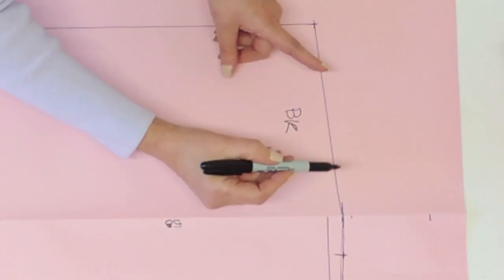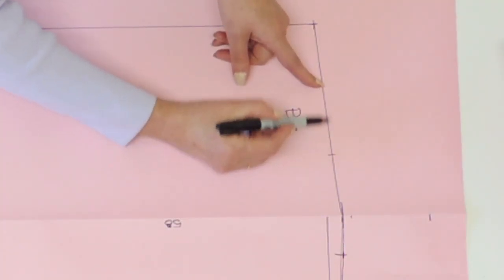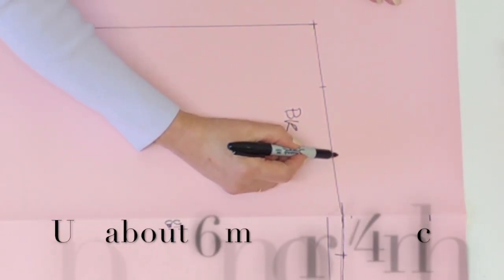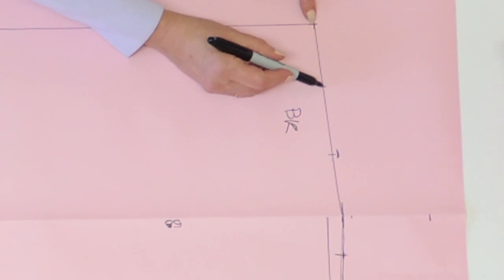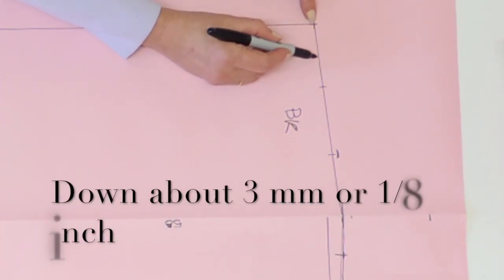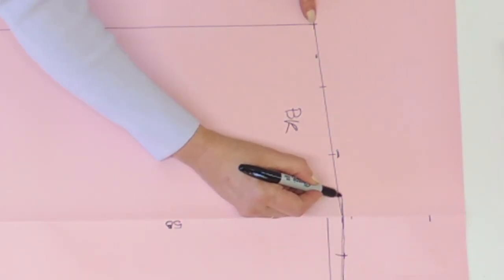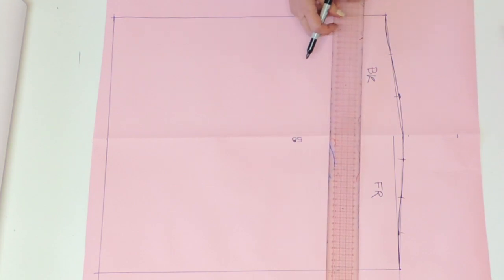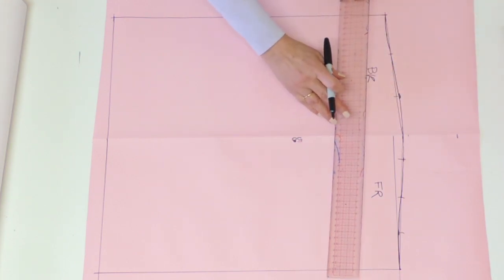Now on the back side you're going to divide the line by three and go up this time a little more like 0.6 and then down a little bit between the last third and the underarm point maybe 3 millimeter. Then connect all your lines. The sleeve is finished. You could now put your seam allowance all around.